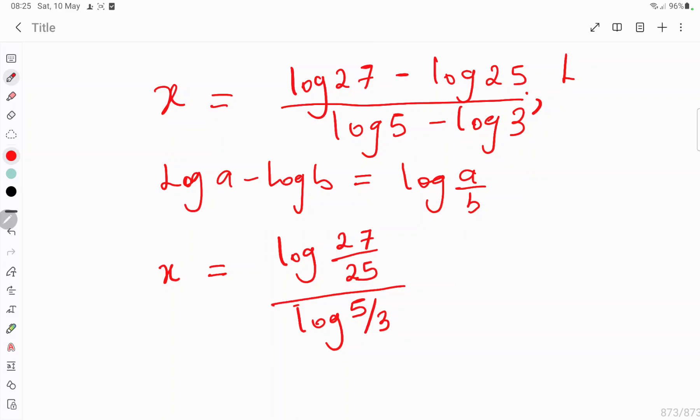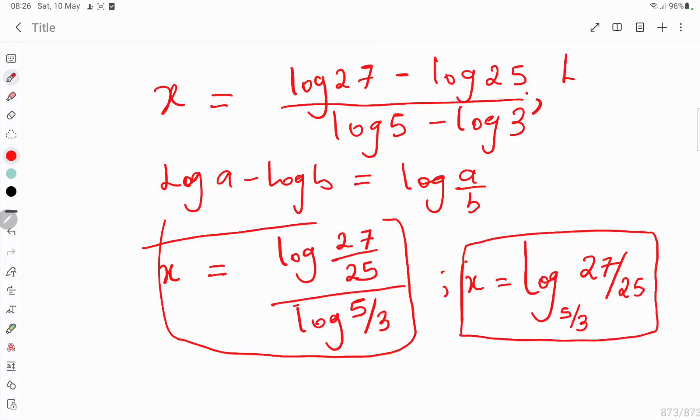And since we have this, you can now see that this is the value for x. This is the value for x. Or you can use change of base showing that x is the same thing as, or keeping the base the same, you have it as log base 5 over 3 of 27 over 25. And this is the required solution for this log reading.